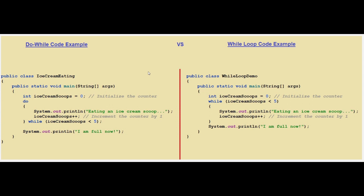In the first code example using a do-while loop, we also initialize ice cream scoops to zero. However, the do-while loop executes the code inside first and only after that it checks the condition to see if the loop should continue.